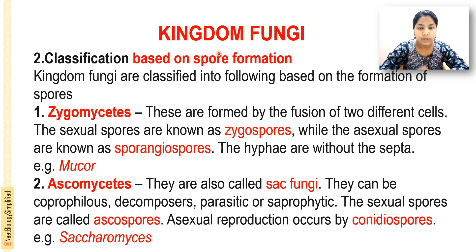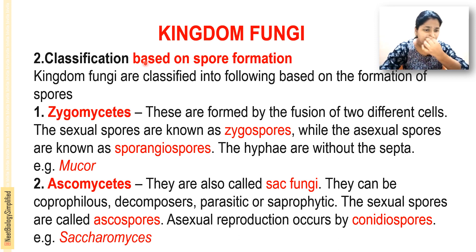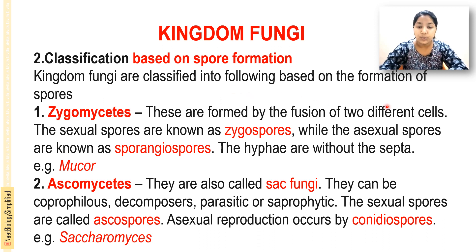The kingdom fungi are mainly classified into four groups based on the formation of spores: Zygomycetes, Ascomycetes, Basidiomycetes, and Deuteromycetes. The first one is Zygomycetes, and these are formed by the fusion of two different cells.